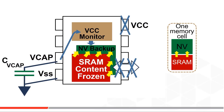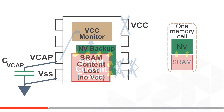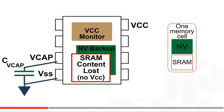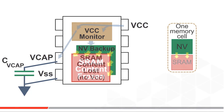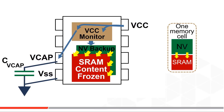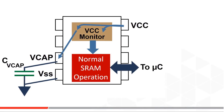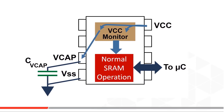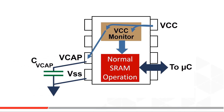The energy on the VCAP capacitor powers the device until the SRAM content is safely stored in the non-volatile transistors. Of course the serial SRAM loses its content when power is gone, but when power comes back the values stored in the non-volatile transistors transfer back to the SRAM, and the VCAP is again charged up so it will be ready for the next power down event.